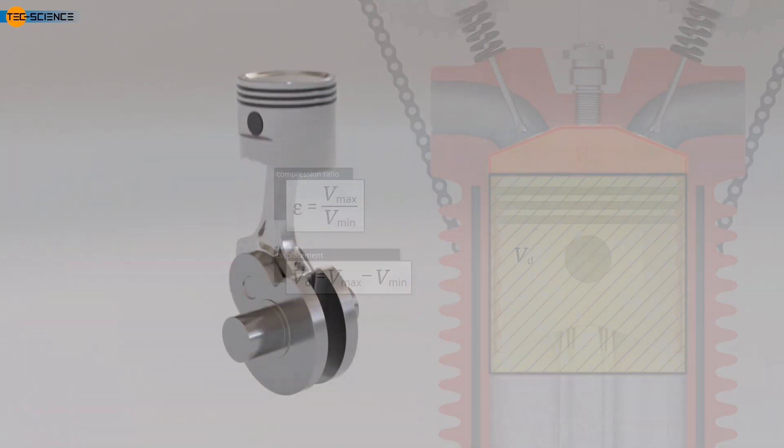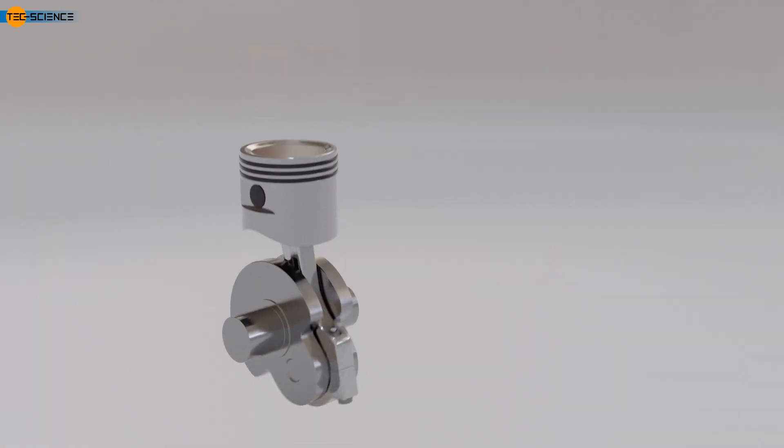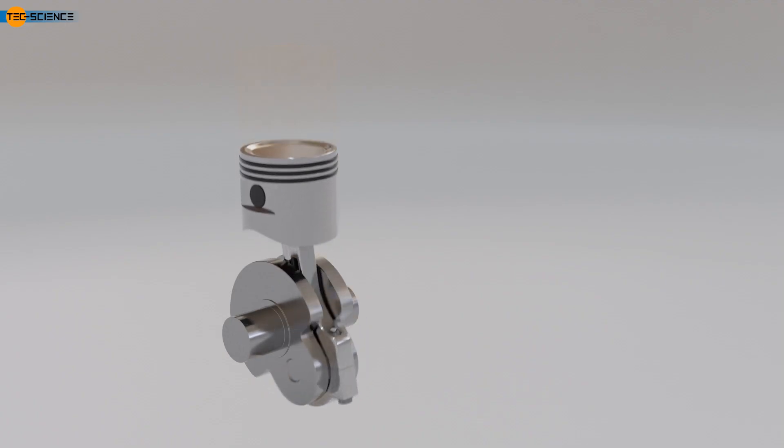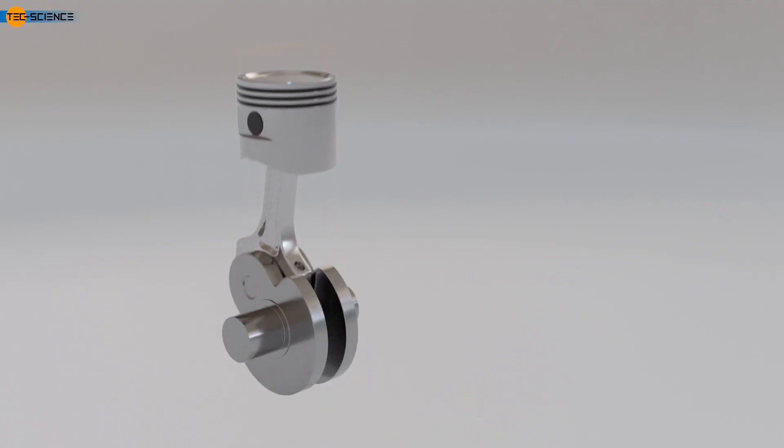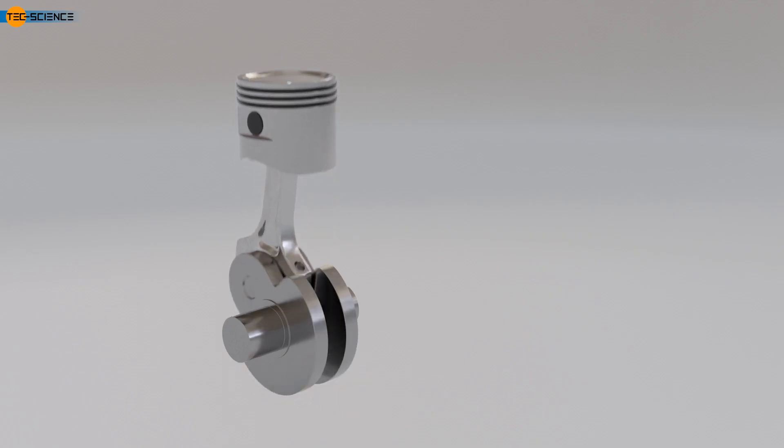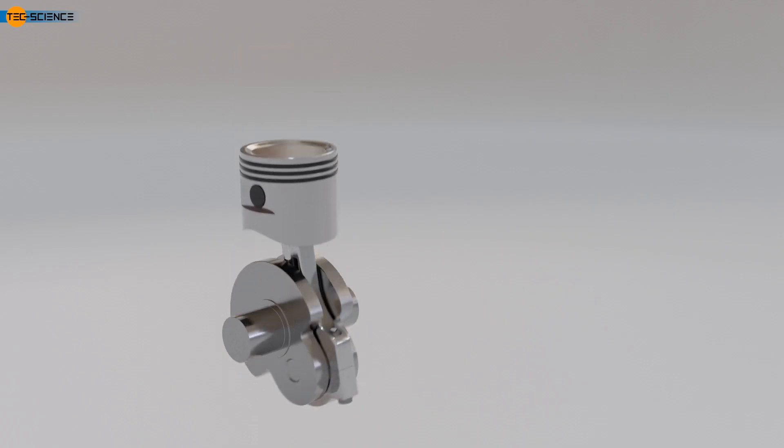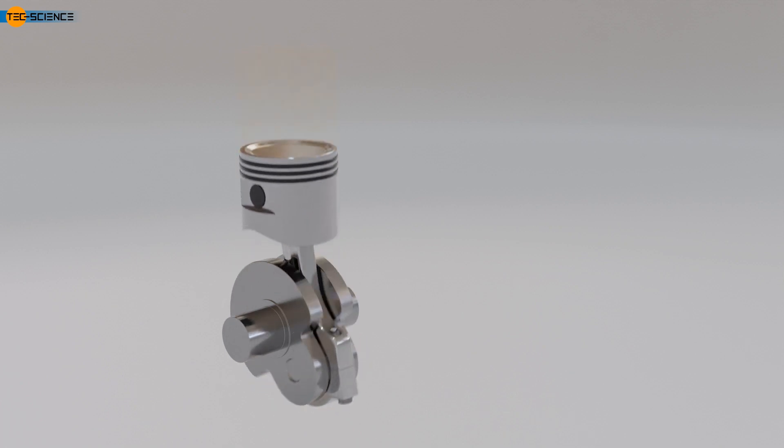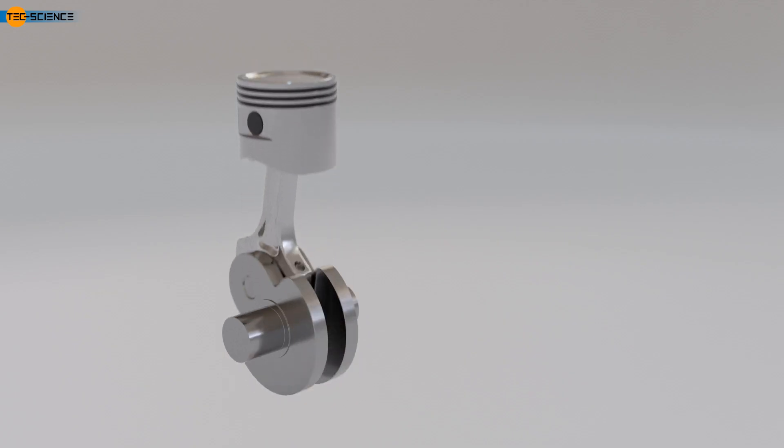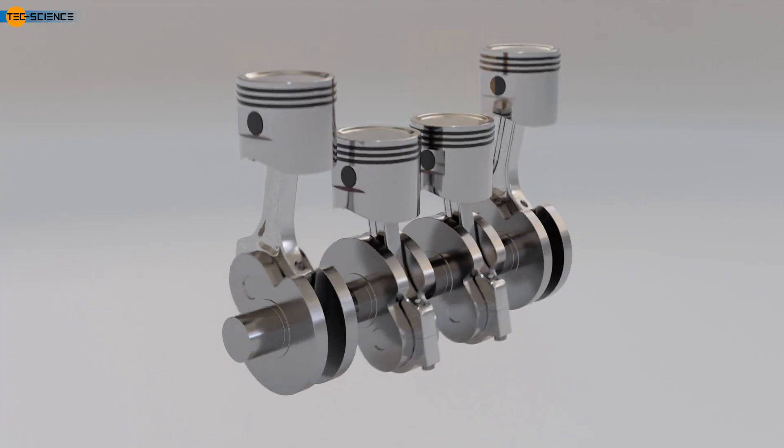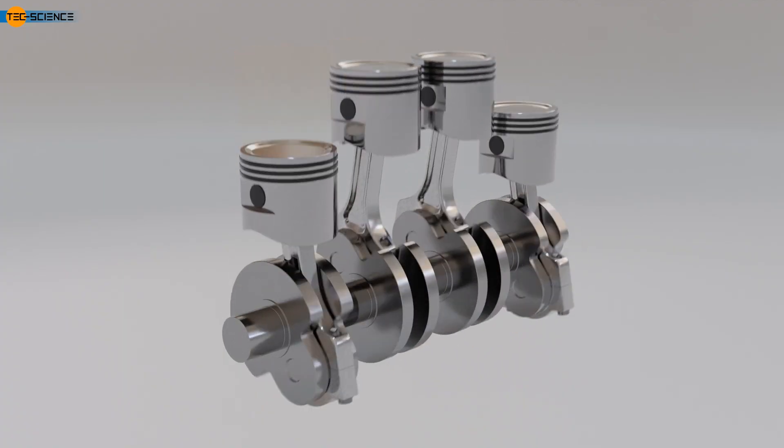We will now take a closer look at the advantages and disadvantages of having multiple cylinders in an engine. First, it should be noted that the 4-stroke cycle in a 4-stroke engine occurs within 2 crankshaft revolutions. Therefore, if only one cylinder were used in the engine, there would essentially be a lot of idle time. Due to the imbalance, this would lead to strong vibrations and loud engine noises. A clear example of such loud and rough operation can be seen in older tractors, which were often built with single-cylinder engines in the past. In modern vehicles, multiple cylinders are therefore arranged in a motor block, driving a common crankshaft. For example, if 4 cylinders form an engine, it is referred to as a 4-cylinder engine.